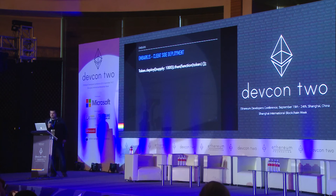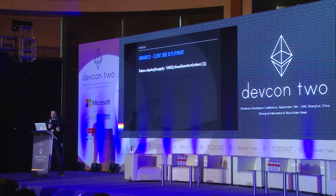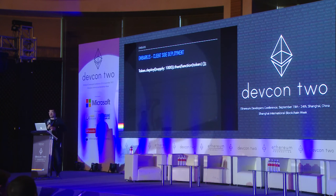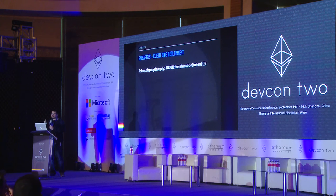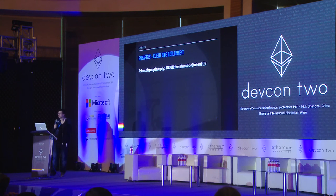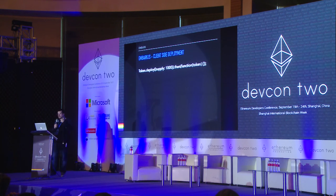It also supports client-side deployment. You can develop the contract in Embark just like you do now, but make it available on the client side so you can dynamically deploy contracts. Certain types of very dynamic dApps require this functionality. For example, if you wanted to build a dApp like 'create your own token,' you'd use this — you'd have a form, the user puts the name of the token, some parameters like the supply, and that command runs on the client side.